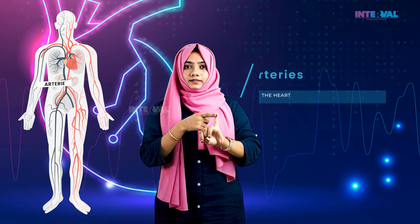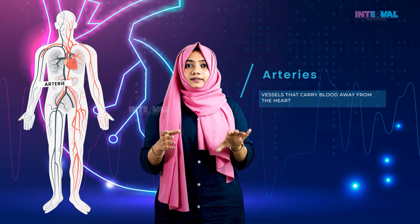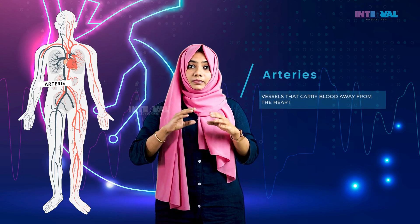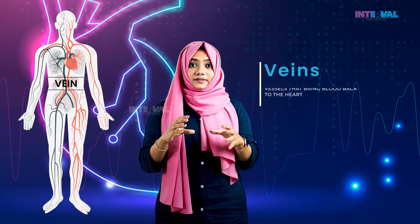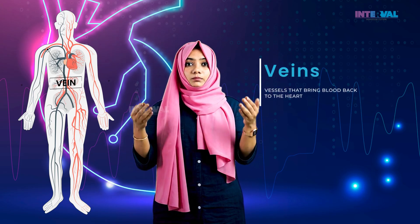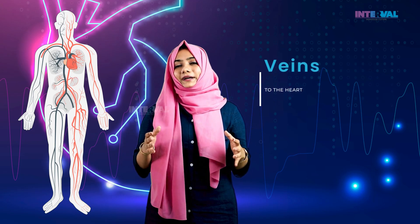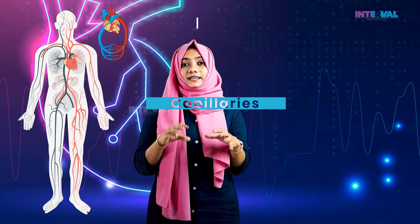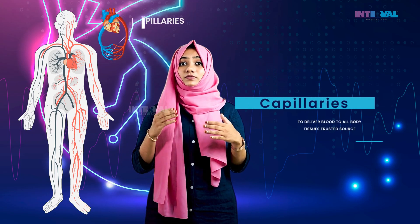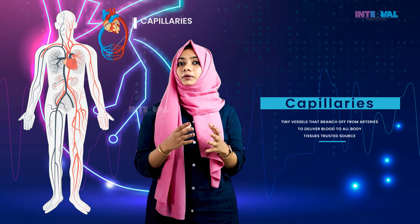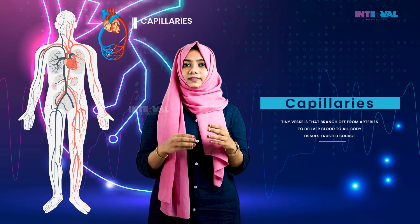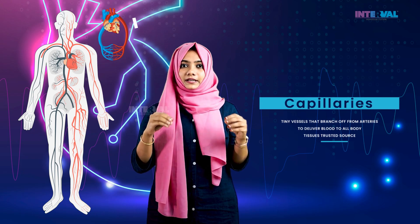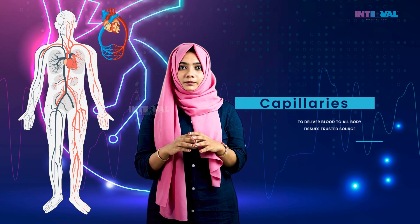The first one is arteries. Arteries are the vessels that carry blood away from the heart. The second one is veins. Veins are the blood vessels that carry blood towards the heart. The third one is capillaries. Capillaries are tiny blood vessels which are branches of the arteries, and their job is to deliver blood to all the body tissues.